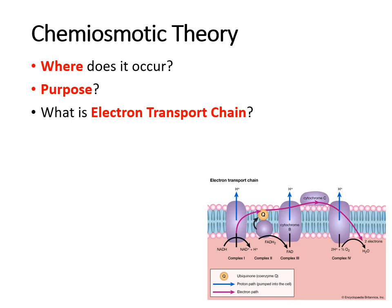When we talk about oxidative phosphorylation and chemiosmotic theory, you'll see the term electron transport chain, also written as ETC or electron transport system. It is basically a series of four complexes — four proteins embedded in the mitochondrial membrane: complex one, two, three, and four. After that is the ATP synthase, sometimes called complex five.